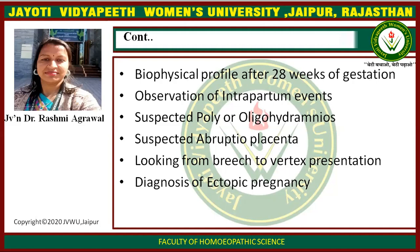Eighteenth, USG is used in suspected polyhydramnios or oligohydramnios — polyhydramnios means excessive amniotic fluid and oligohydramnios means less amniotic fluid. We detect this by USG to assess fetal growth. Nineteenth, suspected abruptio placenta — if the placenta is not properly adherent to the uterine wall during labor, we can manage these cases in antenatal care.